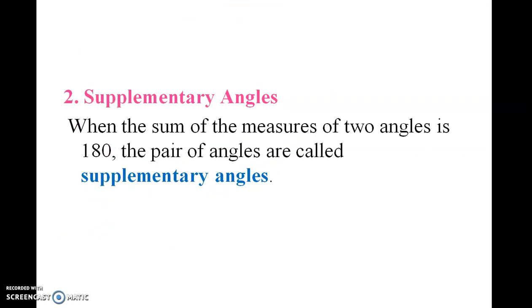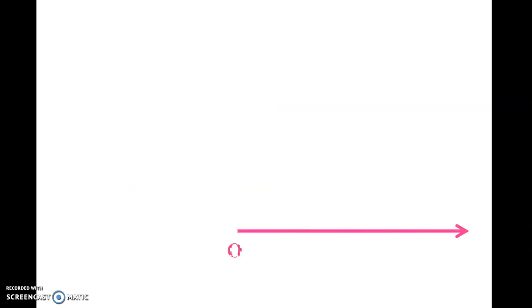Now let us see supplementary angles. When the sum of the measurements of two angles is 180 degrees, the pair of angles are called supplementary angles. Let us see an example.